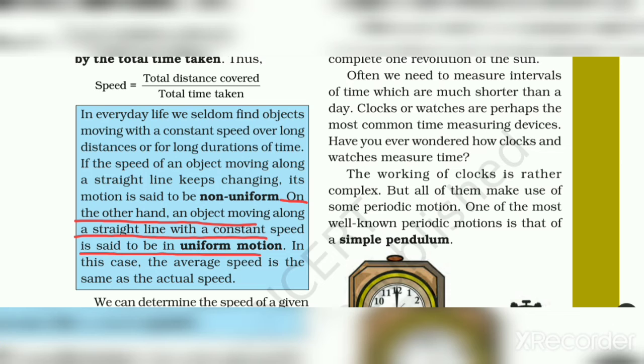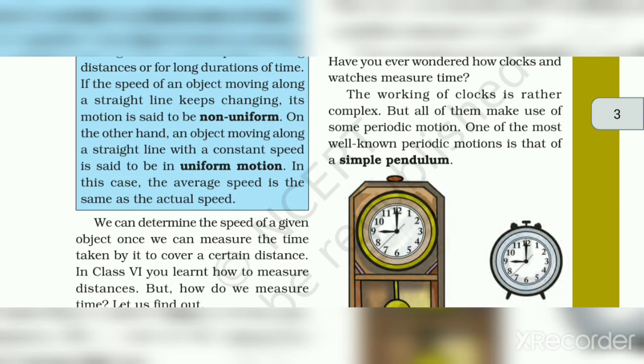Uniform motion kisko kehte hai? Jab straight line ke saath joh object moving ho raha hai, agar woh constant speed se move ho raha hai, toh usko uniform motion kehte hai.